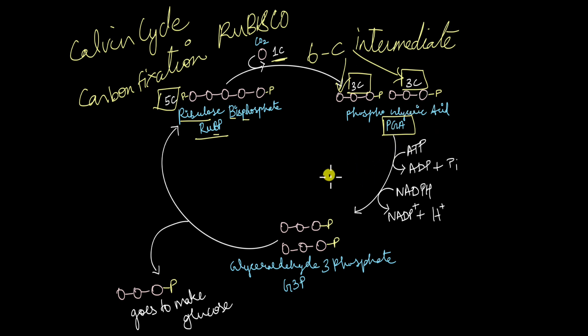The next step is the reduction stage where the products of the light reaction are used up. ATP is converted to ADP and Pi and NADPH is converted to NADP plus and H plus. And whatever electrons are released in this process, they go and combine with this phosphoglyceric acid PGA and convert it to a yet another three carbon compound known as glyceraldehyde 3-phosphate, G3P. There is no change in the number of carbon atoms in the reduction stage. Glyceraldehyde 3-phosphate is also a three carbon compound.